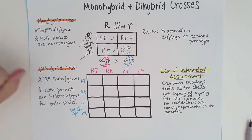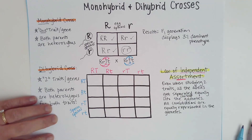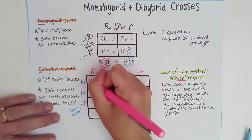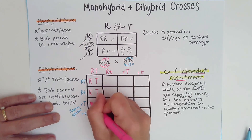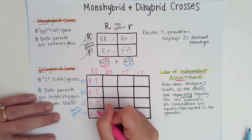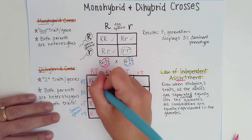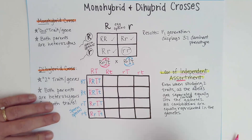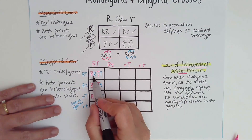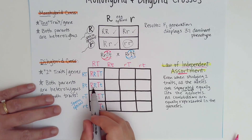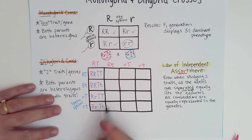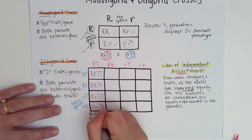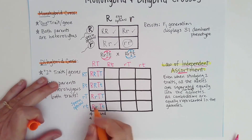Now we're ready for the fun part — let's see what happens in the offspring. In the first column, the eggs all carry big R big T. The sperm that fertilize them are big R big T, big R little T, little R big T, and little R little T. Looking at these offspring: this plant would be round and tall, round and tall, round and tall, round and tall. So four of the sixteen potential offspring will be round and tall — I'll color-code those orange.